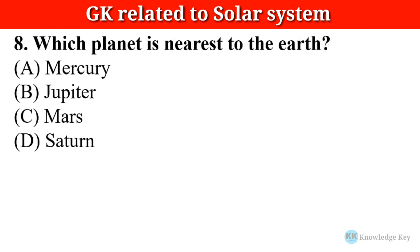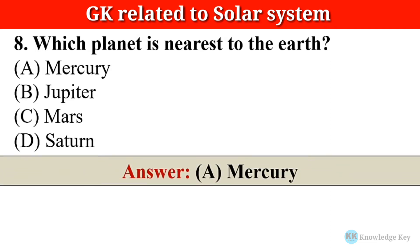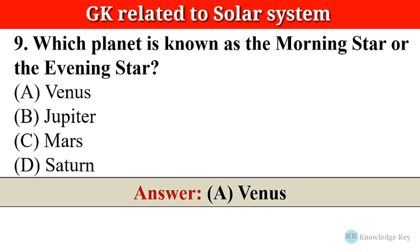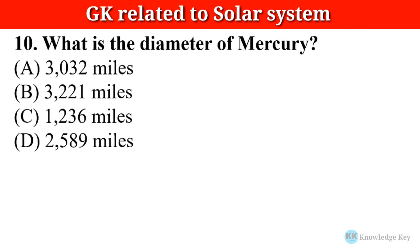Question number eight: Which planet is nearest to the Earth? The correct answer is option A — Mercury. Question number nine: Which planet is known as the morning star or the evening star? The correct answer is option A — Venus.